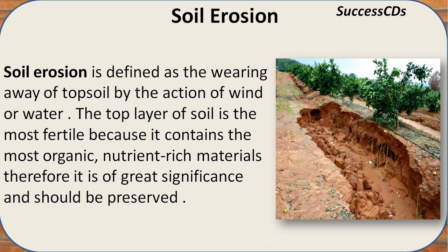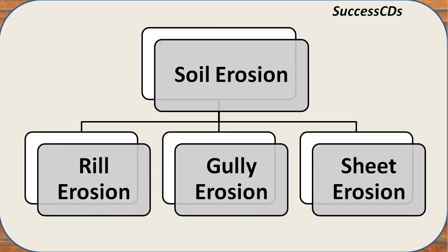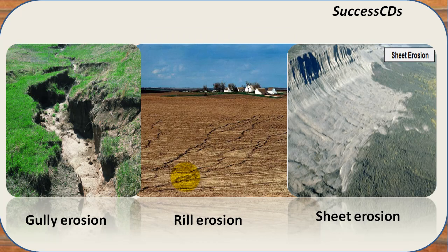Soil erosion is the wearing away of topsoil by the action of wind or water. This topsoil is very fertile and rich in nutrients, so it is important to conserve it. Soil erosion is of three types: rill erosion — removal of soil by concentrated water running through little streamlets; gully erosion — removal of soil along drainage lines more than 30 centimeters deep by surface runoff water; and sheet erosion — which does not take place in channels but in sheet format due to heavy rainfall or runoff water.